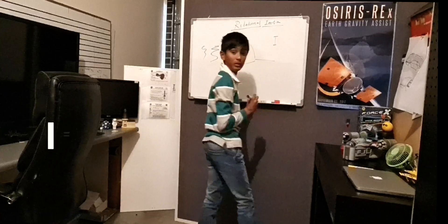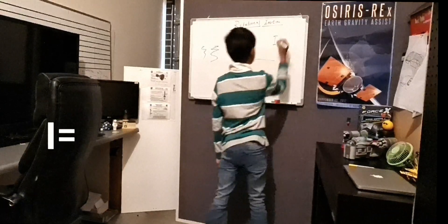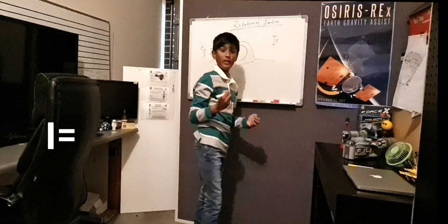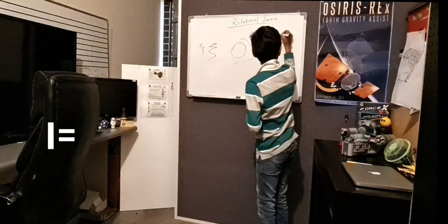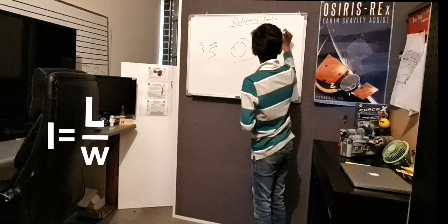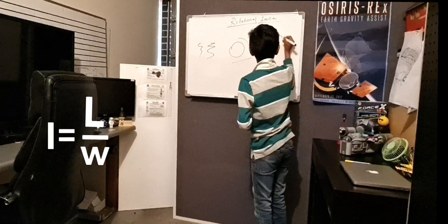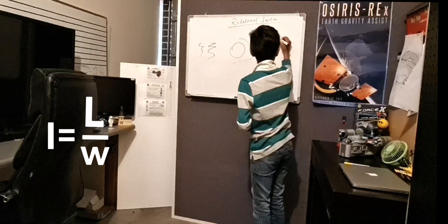I, which is inertia, if we want to calculate the amount of inertia in this, this equals a momentum here, which we're going to put as L, divided by our angular momentum, divided by our angular velocity, which is represented as this W here.